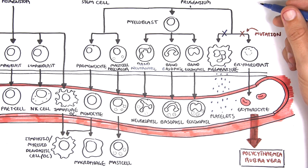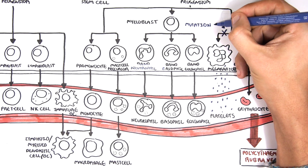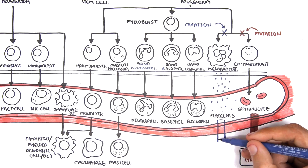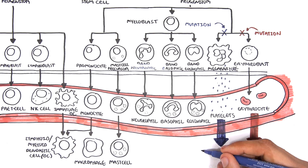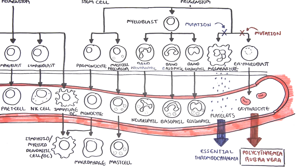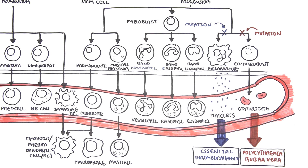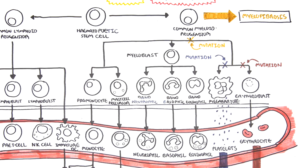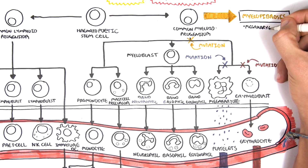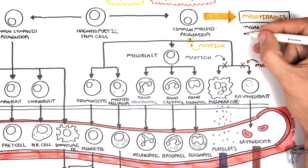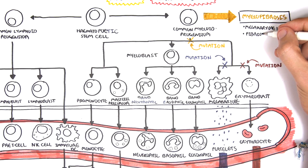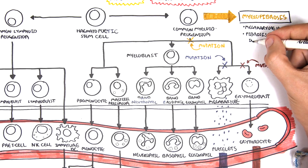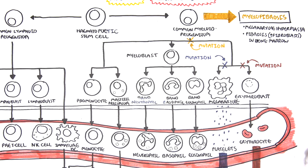Similarly, a mutation along the megakaryocyte lineage can lead to proliferation of megakaryocytes and overproduction of thrombocytes (platelets), leading to essential thrombocythemia — characterized by a large number of circulating platelets. Finally, mutations in other parts of the myeloid progenitor cell pathways can lead to myelofibrosis. Primary myelofibrosis is characterized by megakaryocyte hyperplasia and fibrosis due to increased fibroblasts in the bone marrow, which deposit large amounts of collagen, leading to bone marrow failure — the inability of the bone marrow to make more cells.